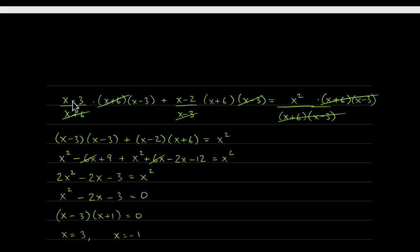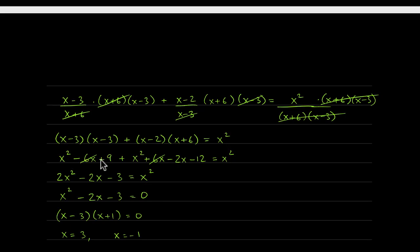Taking inventory of what remains: x minus 3 times x minus 3 from the first term, x minus 2 times x plus 6 from the second, and x squared on the right. Multiplying out: x minus 3 times x minus 3 uses the square of a difference formula — a squared minus 2ab plus b squared — giving x squared minus 6x plus 9. Foiling x minus 2 times x plus 6 gives x squared plus 6x minus 2x minus 12.